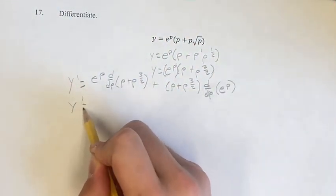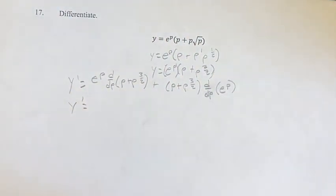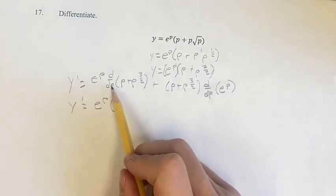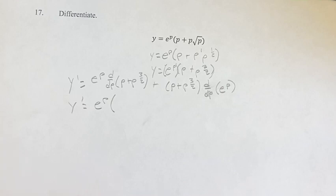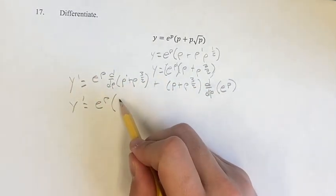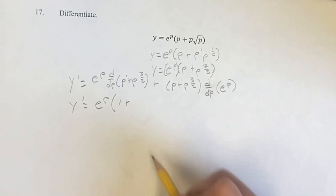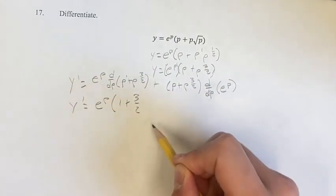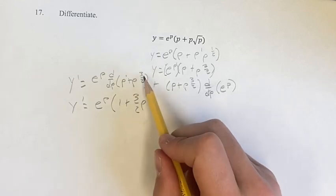So now we have the derivative, we just have to calculate the inner derivatives and then simplify. So e to the p times the derivative of p is just one, because we have a linear term here, so the derivative is just its coefficient. So one plus, and then with this power function, you bring your exponent down to your coefficient. And then your new exponent is the old one minus one.